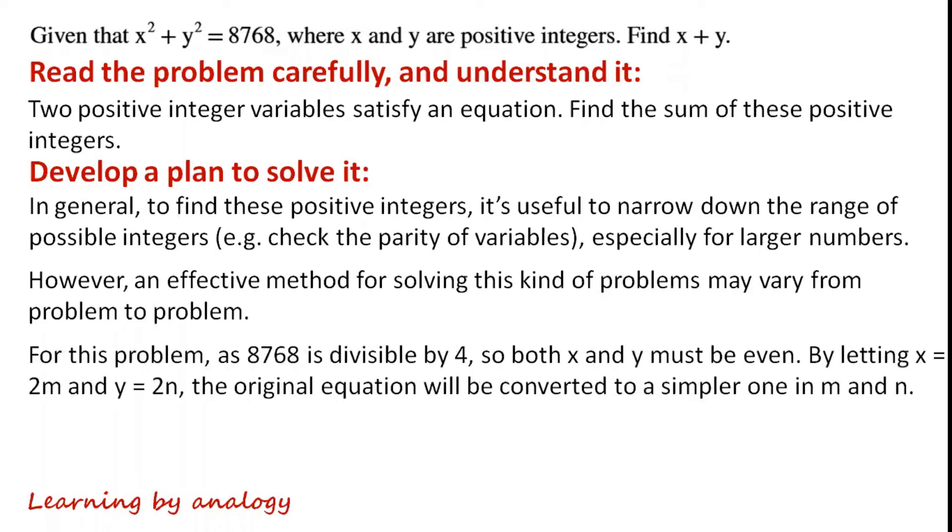This problem: as 8768 is divisible by 4, so both x and y must be even. By letting x equal 2m and y equal 2n, the original equation will be converted to a simpler one in m and n. Repeat the process until the right-hand side of the equation isn't divisible by 4.